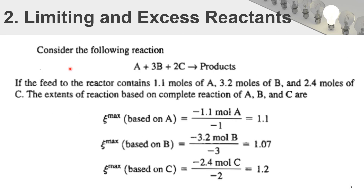Let us see one more example. The stoichiometric equation is A + 3B + 2C giving some product, and the system is fed with 1.1 moles of A, 2.2 moles of B, and 2.4 moles of C — deviating from the balanced equation. Applying the maximum extent of reaction, the values are 1.1 for A, 1.07 for B, and 1.2 for C. Since 1.07 is the minimum, B is the limiting reactant and A and C are the excess reactants.